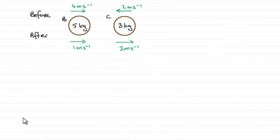And the last part of this question, what we've got to do is find the magnitude of the impulse received by C. What I've done is I've updated the diagram with the mass M that we found for B, which was 5 kilograms.